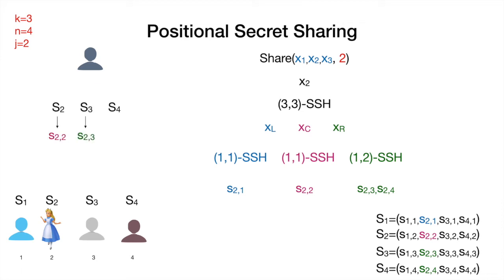If instead we are in the situation where we have only s2, s3, and s4, it is easy to see that the information we have is not sufficient to reconstruct x2, because we have no way to reconstruct the left share given that s1 is not in the hands of the evaluator.